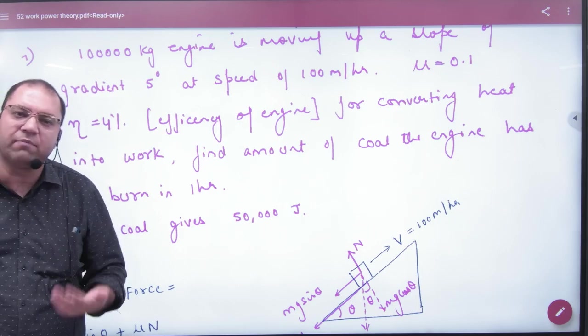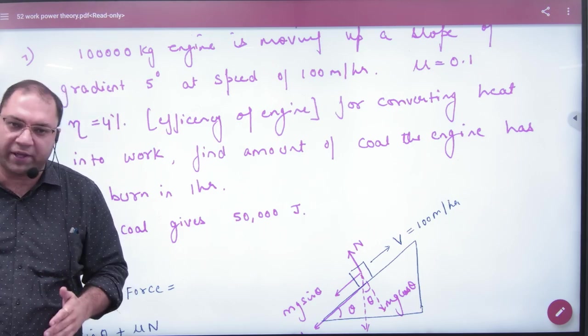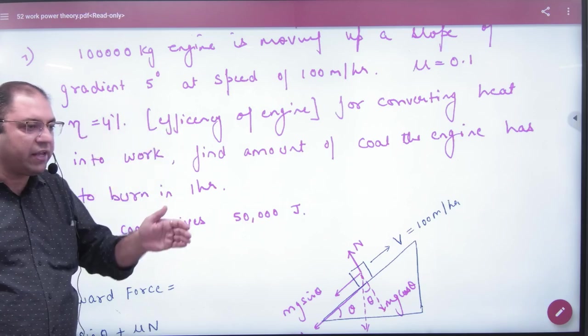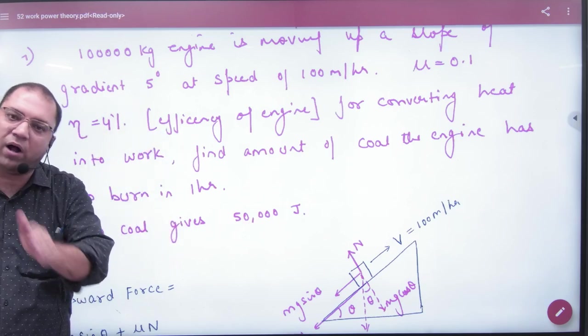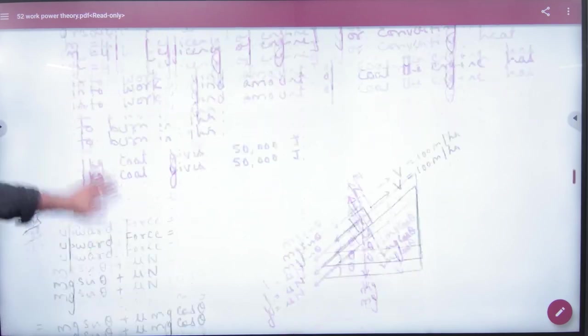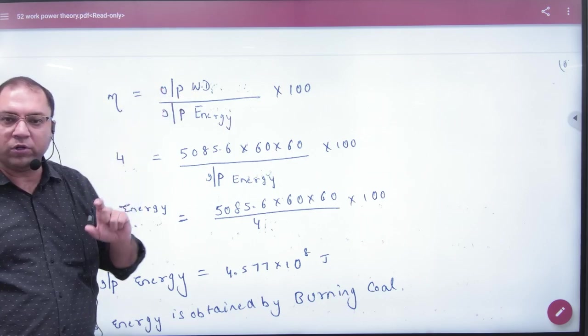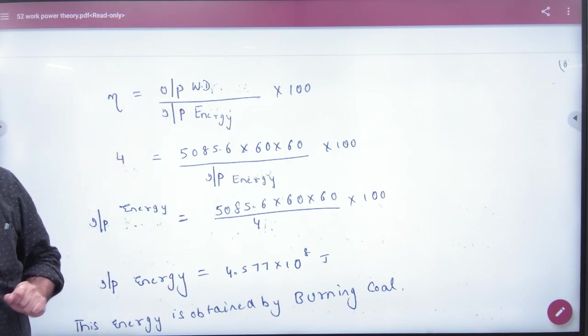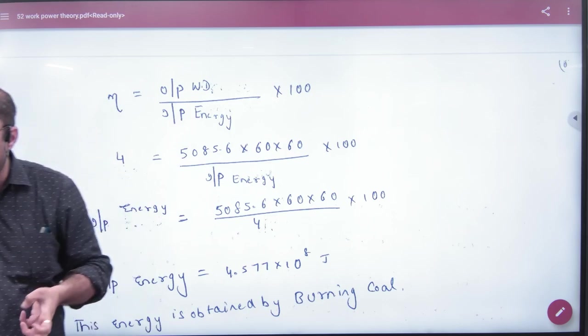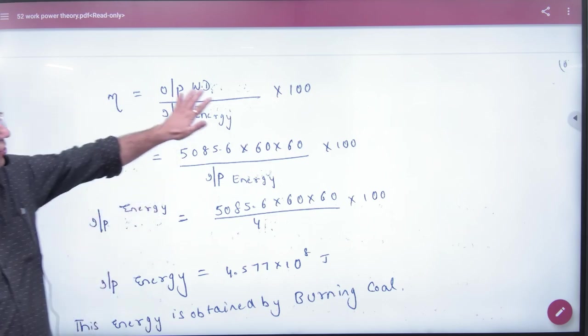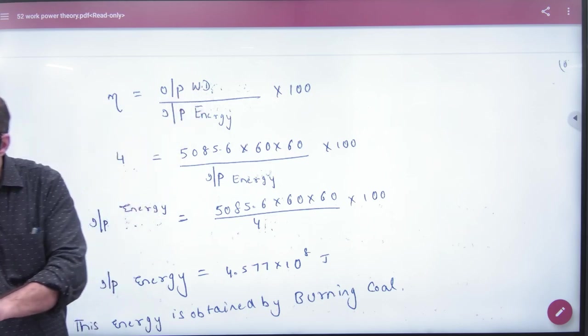Whenever you have an efficiency problem, always start by writing the efficiency definition first - you'll get at least half the answer. So the efficiency equals the output work done by the engine divided by the input energy from coal. This definition is clear.